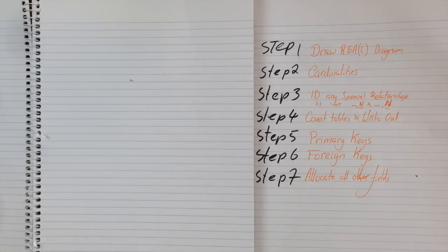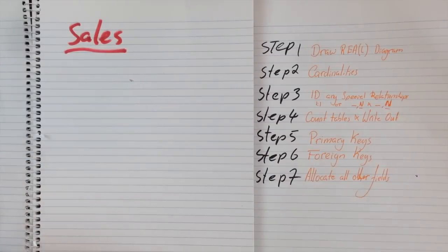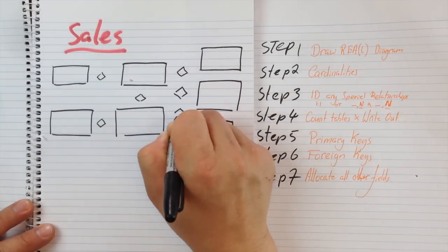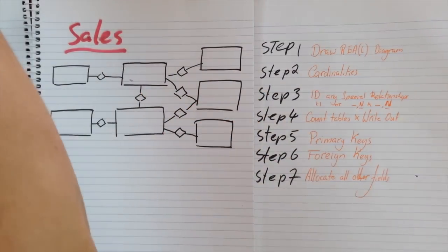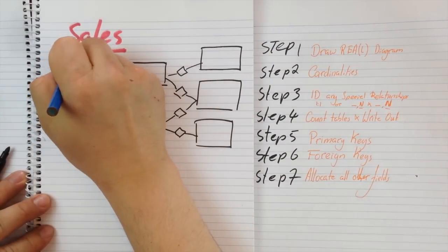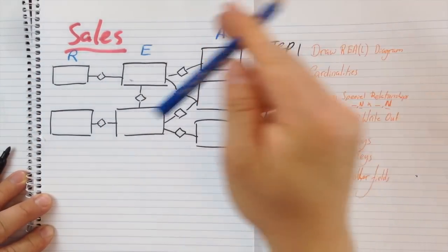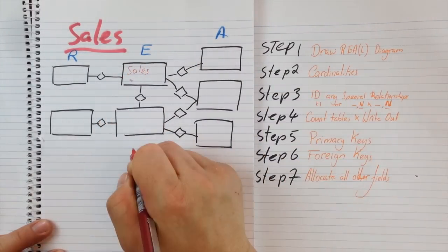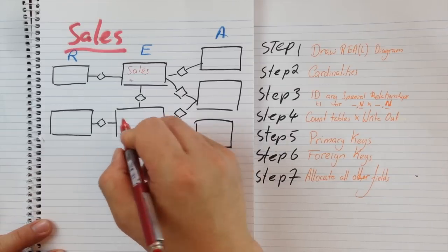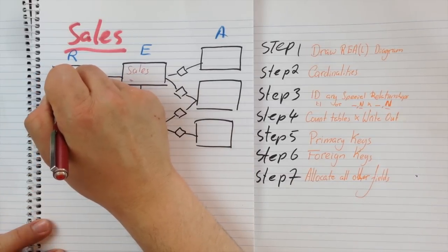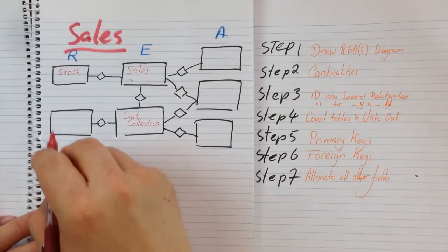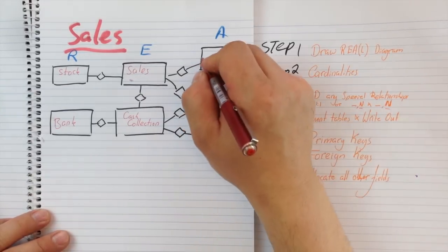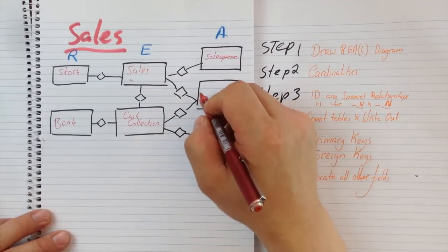Step one is to draw your REA diagram. Let's do one for sales. We're going to start off with our basic REA diagram structure. This is going to give us our resources, our events, and our agents. Since this is our sales database we can put sales as the main event. The corresponding event would be a cash collection, otherwise known as a receipt. When we sell stock out, that would be our resource — stock or inventory. Cash collection will then be deposited into a bank account, so this is a list of bank accounts. Our agents will then have a salesperson and also a customer as the outsider.